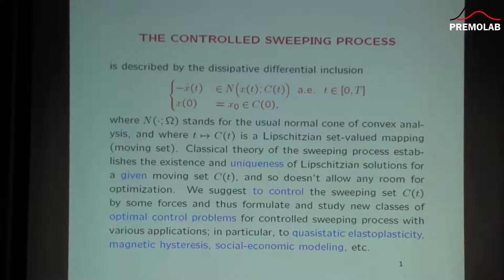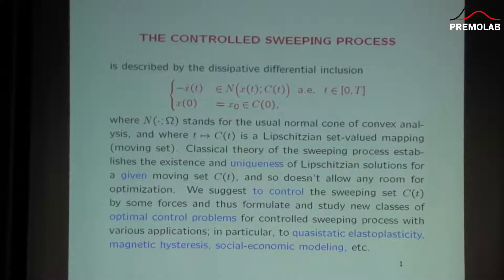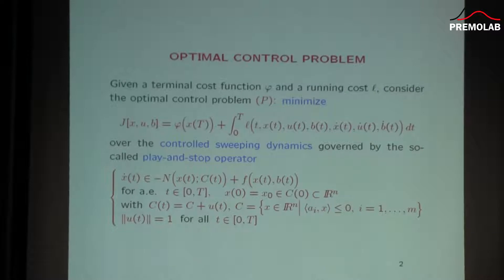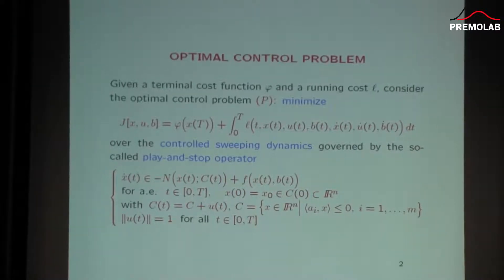So far we consider the sweeping process when C(t) is a moving set, but when the set is a fixed set, as in conventional theory of the sweeping process, the question is about existence, uniqueness, and numerical issues — not about optimization. Considering optimization, let's consider this particular model when C(t) is controlled. We have a fixed set C given by a polyhedral description. Besides that fixed set C, we put a control parameter U(t). This particular model is known as the play and stop operator, which is a very typical description of problems of hysteresis and many other problems.